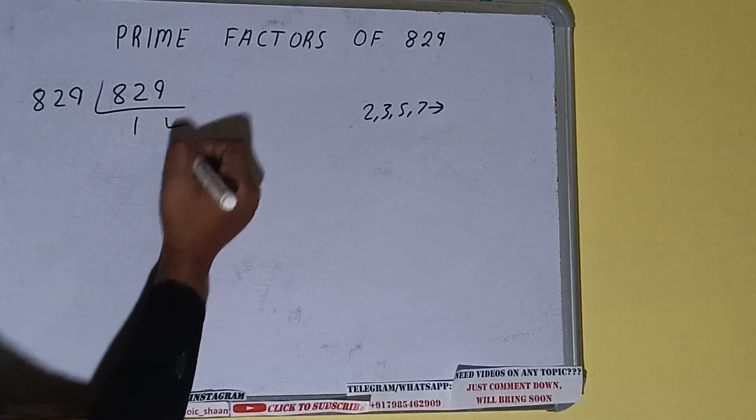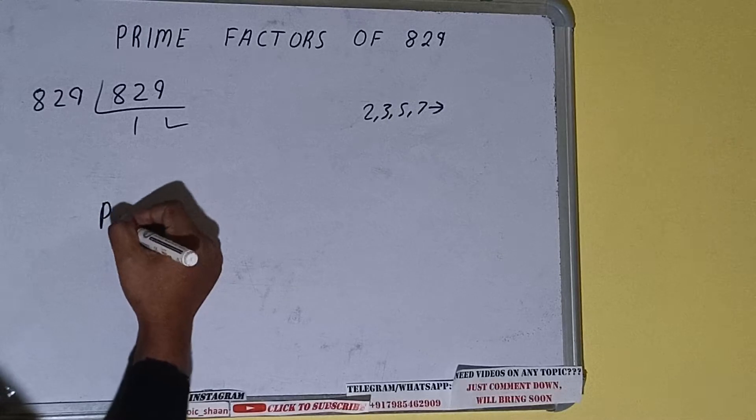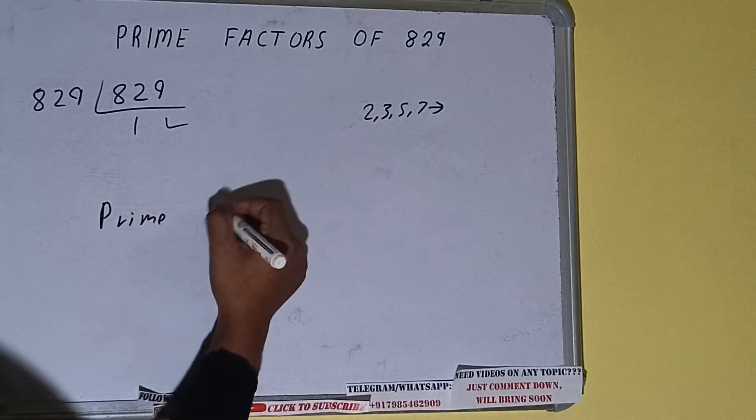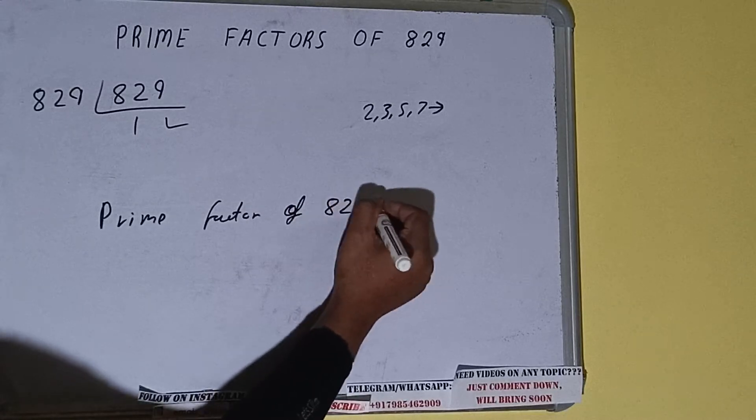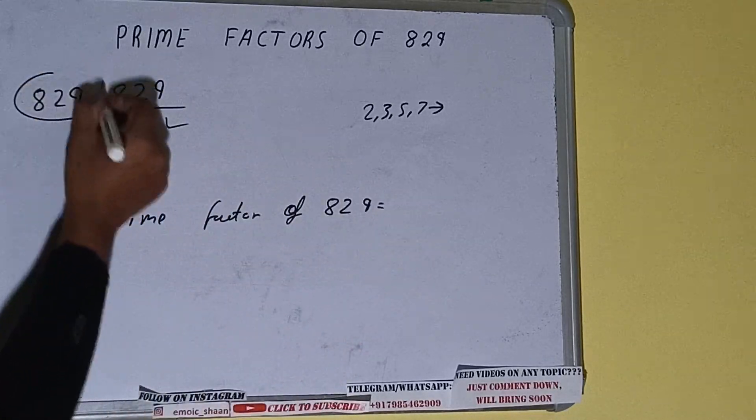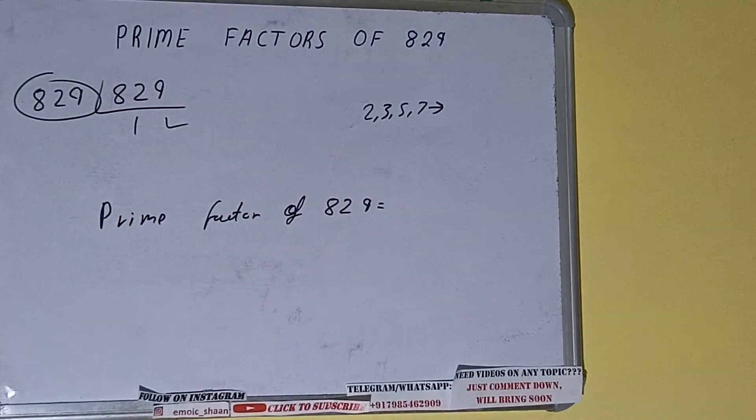Once we get 1, we need to stop and do one last thing. The prime factors of 829 equals whatever we have on the left-hand side, that is 829. That will be the answer.